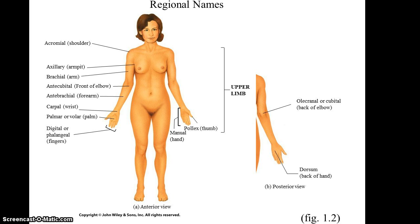The entire hand can also be referred to as the manual region, and the thumb has its own name — it's called the pollux region. On the posterior side of the upper limb, you have the olecranal or cubital region for the back of the elbow, also known as the funny bone, and the dorsum for the back of the hand.